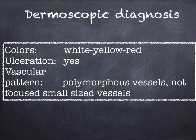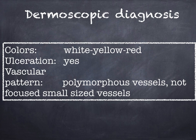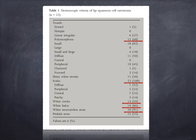Regarding the dermoscopic diagnosis, we saw the presence of white, yellow, and red colors mixed together. Ulceration was quite a typical finding, as well as the presence of a vascular pattern including polymorphous vessels and vessels that could be variable in size. Polymorphic vessels and scales were found in the majority of all cases, as well as the presence of white circles, white halos, and white structureless areas.